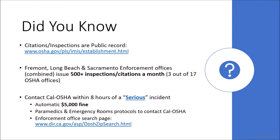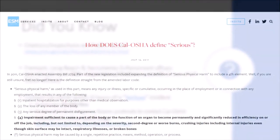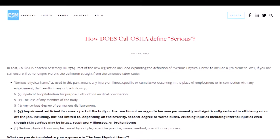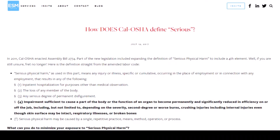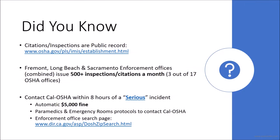Second, employers that experience a serious citation must contact Cal OSHA within the required eight-hour timeframe. For the definition of serious, you can find it on our website under our blog section. Employers that do not contact Cal OSHA within the required timeframe can be subject to a $5,000 fine. Additionally, paramedics and emergency room technicians have protocols to report a serious injury to Cal OSHA if it is known to be work-related.